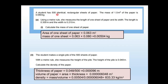A student has 500 identical rectangular sheets of paper. The mass of 1 meter square of the paper is given. She measures the length and width of 1 sheet using a meter rule. The area of 1 sheet is calculated as 0.063 meter square. The mass of 0.063 m² of paper is 0.063 × 0.080 = 0.00504 kilograms.